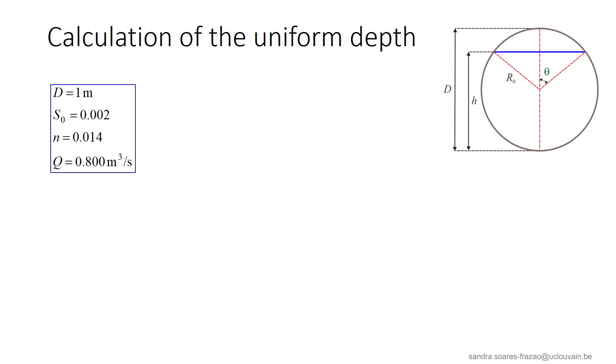The first step is to check the possible pipe full discharge of this pipe. Indeed, we know that this value is not the maximum possible discharge, but it is close to it. So it is a very useful value in the design of sewers, as it can be calculated easily without any iterations.